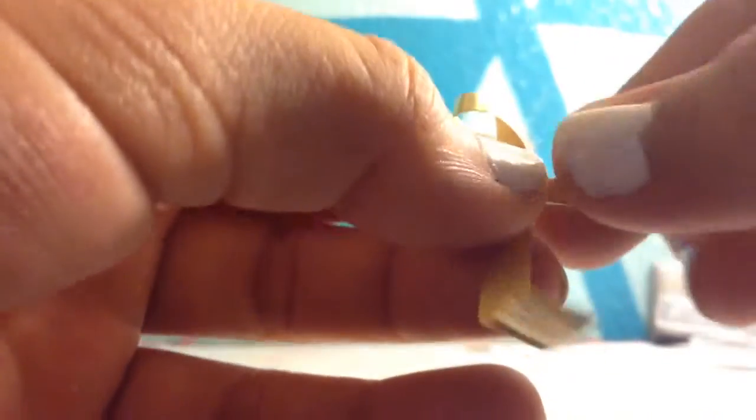Then you're going to flip it to the back side and fold it like that, like a little ribbon. Once you've done that, you're going to put the other side into the loop.